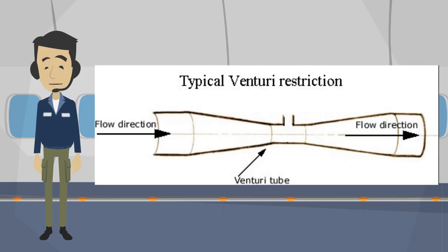Where is the area of lowest pressure and highest velocity in this Venturi? If you chose this area, you are correct.